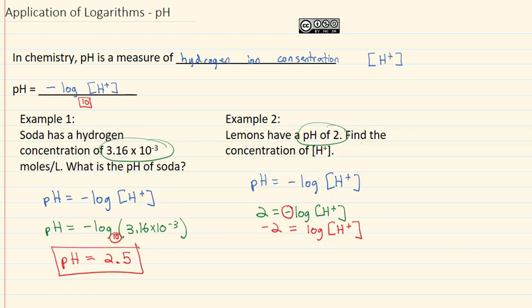Now we can solve this equation just like we did in our previous section by converting to an exponent, where we know the base is that invisible 10. The exponent is the negative 2. And it's going to equal what's inside the log, that hydrogen concentration.